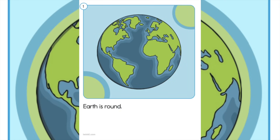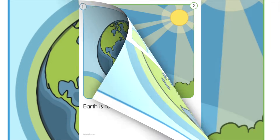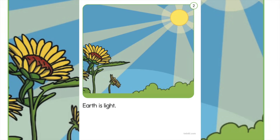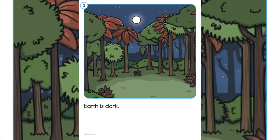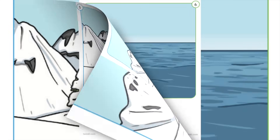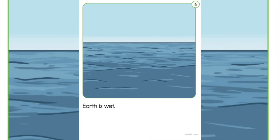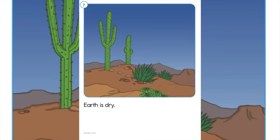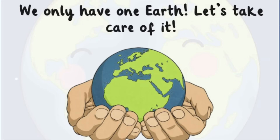Earth is round. Earth is light. Earth is dark. Earth is hot. Earth is cold. Earth is wet. Earth is dry. We only have one earth. Let's take care of it.